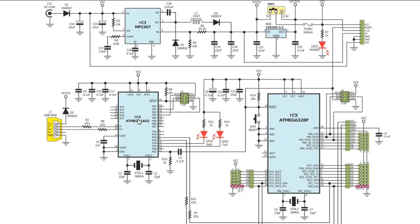We have IC4 and IC5 — the same type of IC but with different references. IC4 is the ATmega16U2 and IC5 is the ATmega328P.